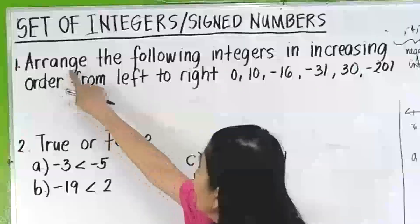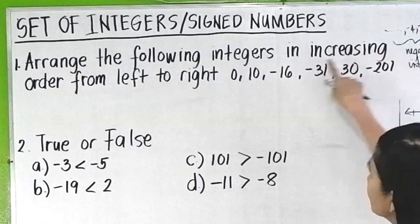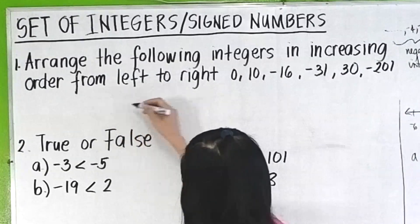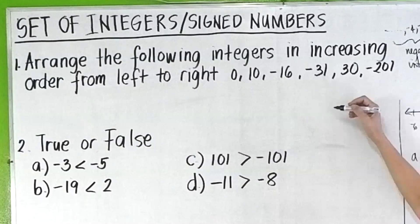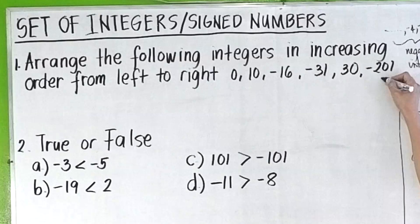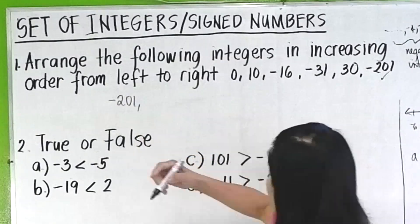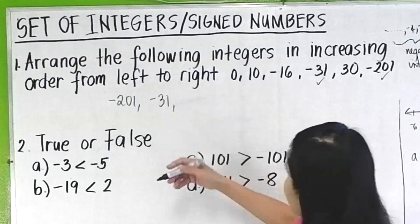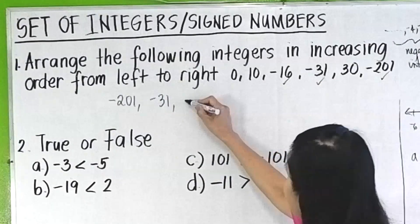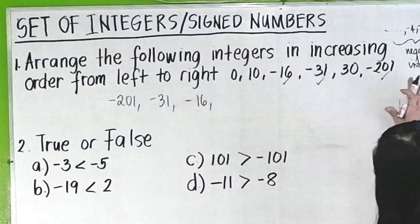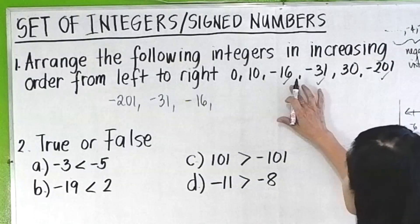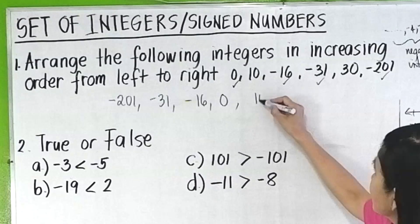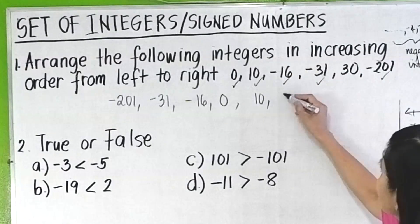Question number one: arrange the following integers in increasing order from left to right. The smallest is negative two hundred and one. Next is negative thirty-one, then negative sixteen, then zero, then ten, and then thirty.